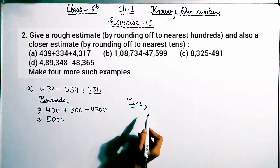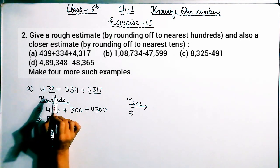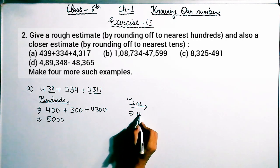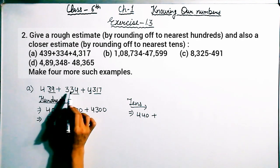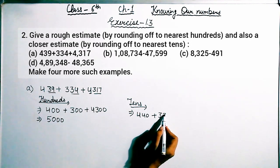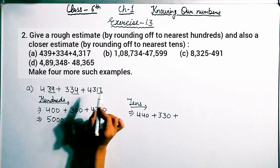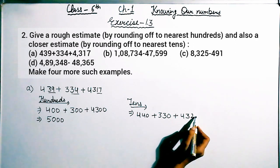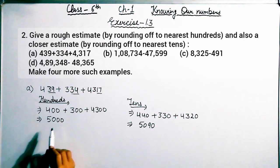Secondly, rounding off to the nearest ten. For tens, we take the last two digits. For 439: 4 will stay the same, and 39 lies between 30 and 40, more closer to 40, so it becomes 440. For 334: 3 stays the same, and 34 lies between 30 and 40, nearest to 30, so it becomes 330. For 4370: 43 stays the same, and 17 lies between 10 and 20, more closer to 20, so it becomes 4320. Their sum is 5090. So this is rounding off to the nearest ten.